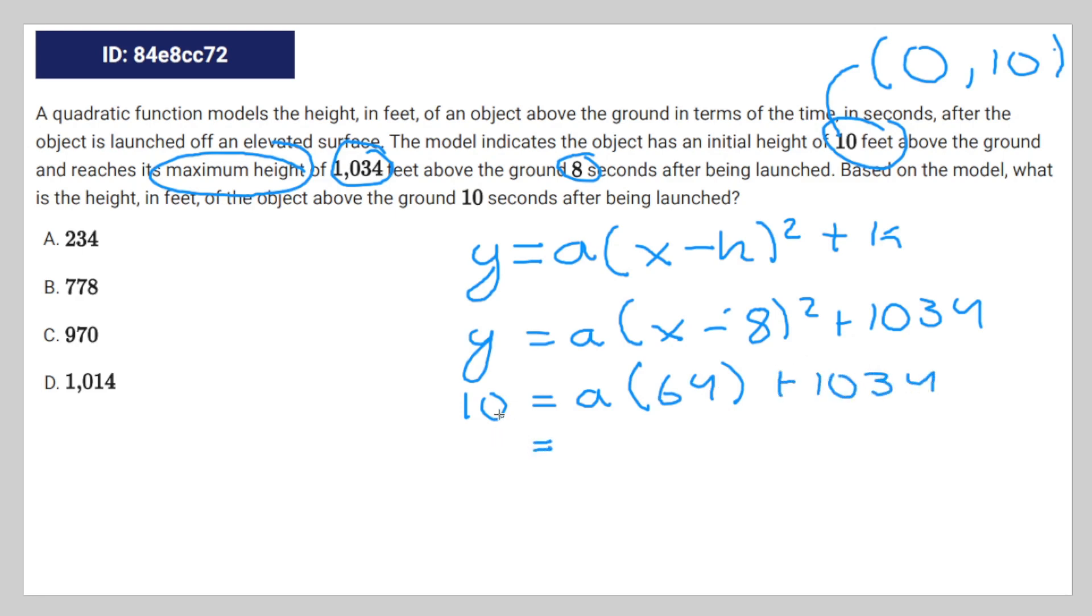So that's going to be a is equal to negative 1,024 divided by 64. So divide both sides by 64, you're going to get... a is equal to negative 16.